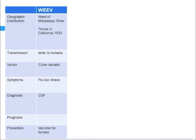Next is St. Louis encephalitis, found throughout the United States and the Gulf Coast. The last epidemic in our state was in 1990. Again, bird-to-human transmission via the Culex mosquito causes flu-like illness. In the CSF you see lymphocyte predominance with elevated protein in 30% to 50% of cases. You want to get the IgM in the serum or CSF for diagnosis.